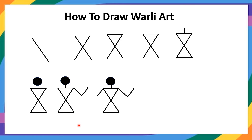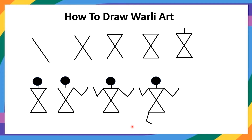Now the next part — one more hand in the same manner. Then we will go on to the legs. You observe here: for both hands and legs, at the end we are giving a small dot, a small point.